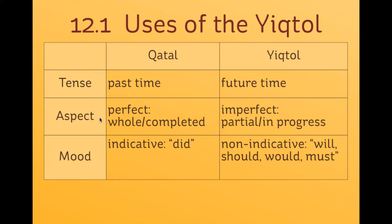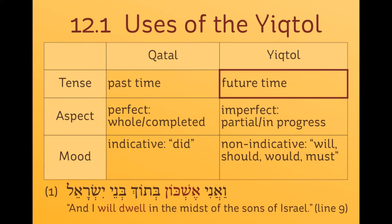Let's look at four uses of the yiktol, each one that occurs in the story that you have learned this week. First, the yiktol can describe just a simple future action, and this happens quite a lot. This is Yahweh speaking.